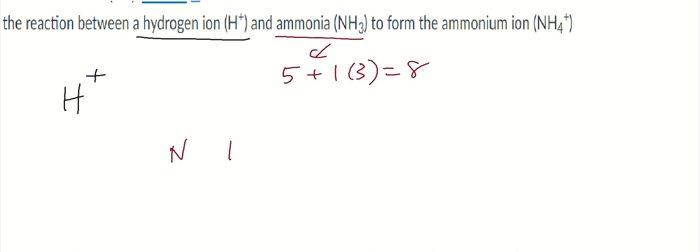Nitrogen is going to be the central atom, and so let's surround it with the three hydrogens. They're each going to need a bonding pair of electrons to the central atom, so that's two, four, six electrons. We're down to two. Those two electrons are going to go as a lone pair on the nitrogen atom of the ammonia molecule.